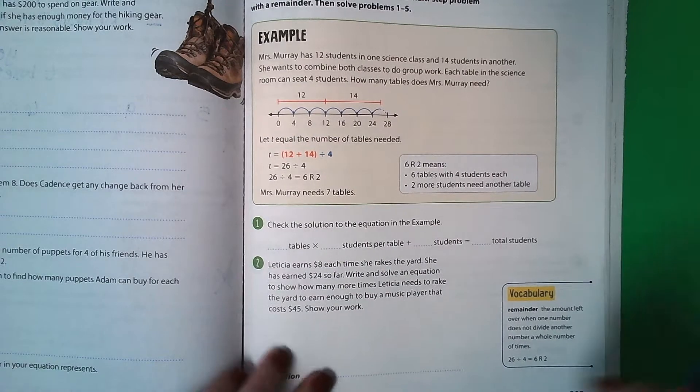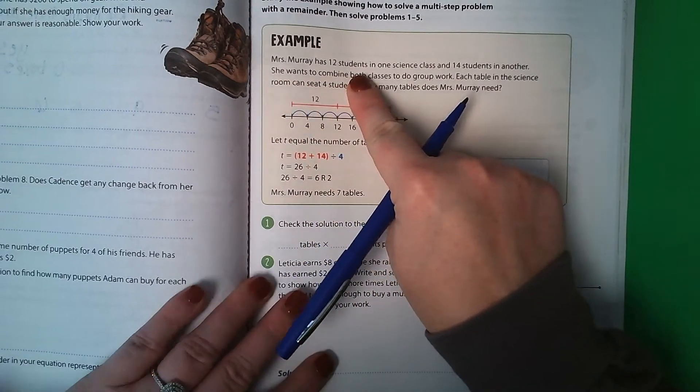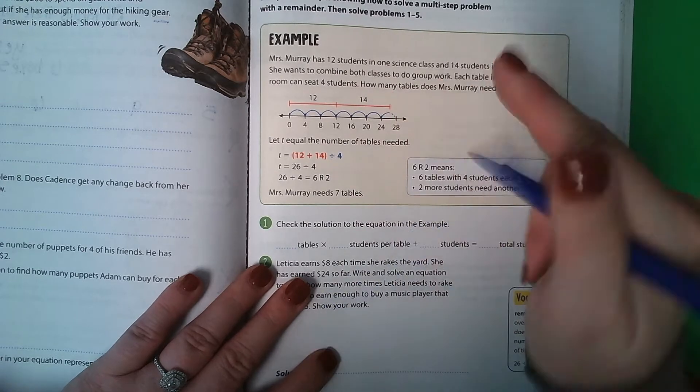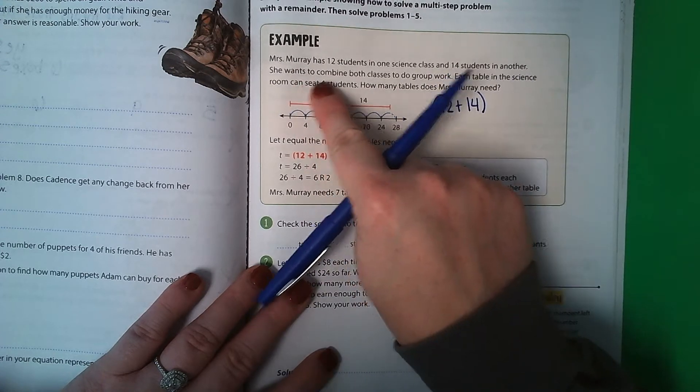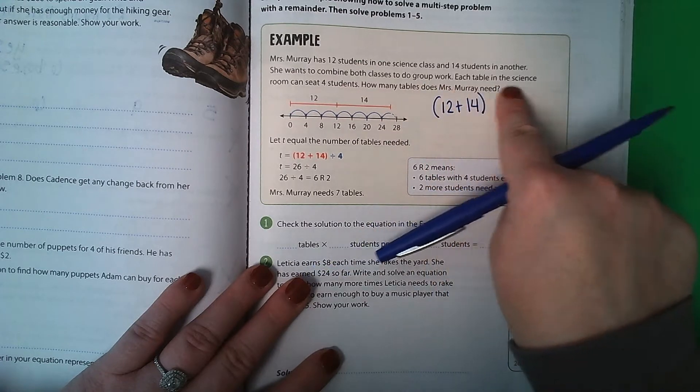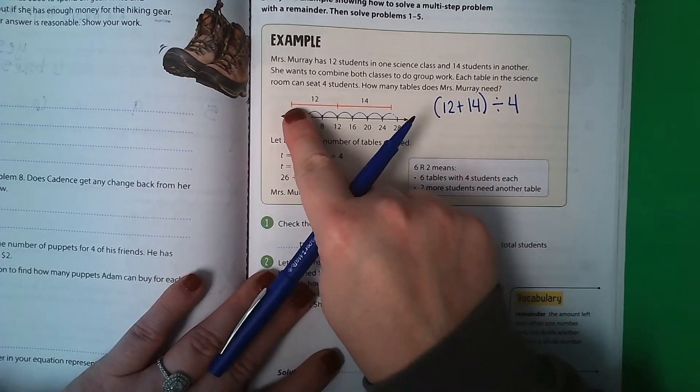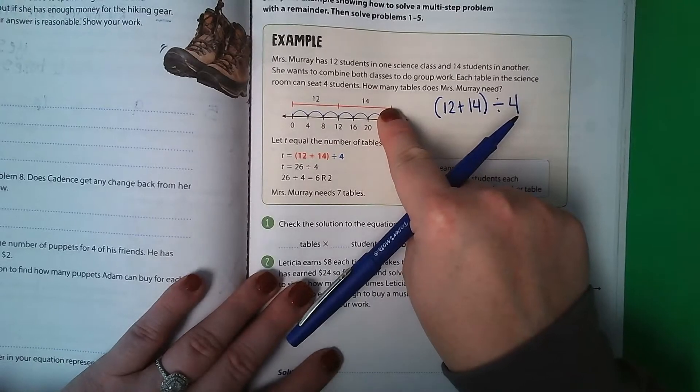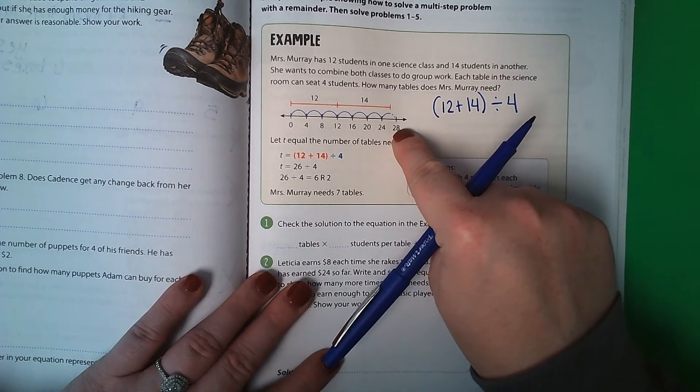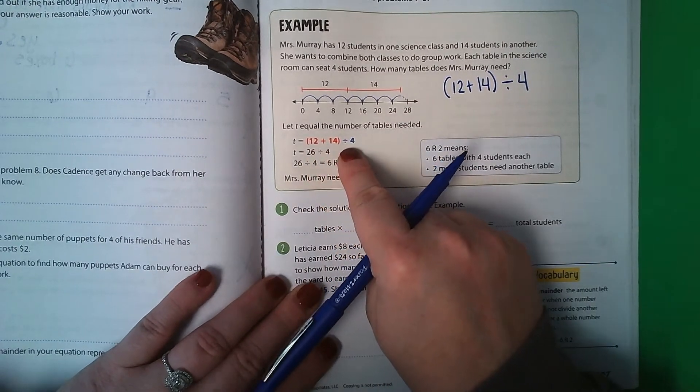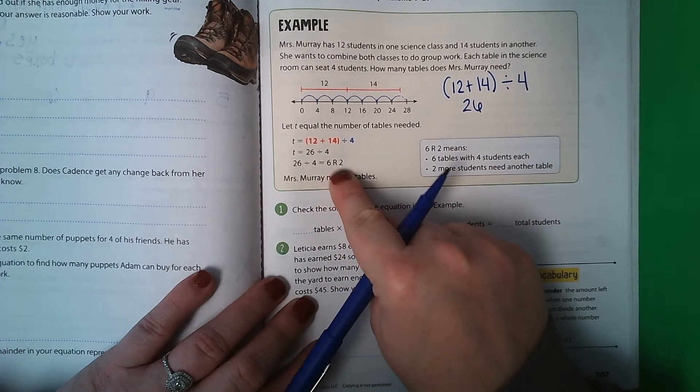So on page 207 here, it says check the solution to the equation in the example. Ms. Murray has 12 students in one science class and 14 students in another. So this is starting off just like that last problem then. 12 students plus 14 students. She wants to combine both classes to do group work. Each table in the science room can seat 4. So that's where we divided by 4. How many tables does Ms. Murray need? You can see here where she has 12 students plus 14 students. She's skip counting by 4's. But look, this one does not go all the way to the 28. So you can see here, 12 plus 14 divided by 4, which is 26. 26 divided by 4 is 6 remainder 2.